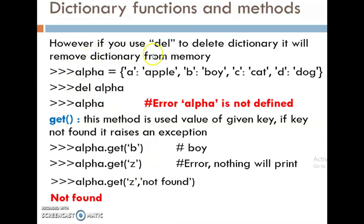However, if we use del for deleting the dictionary, it will remove the dictionary from memory itself. Alpha is equal to: a-apple, b-boy, c-cat, d-dog. We use here this del statement for deleting this dictionary — del alpha.